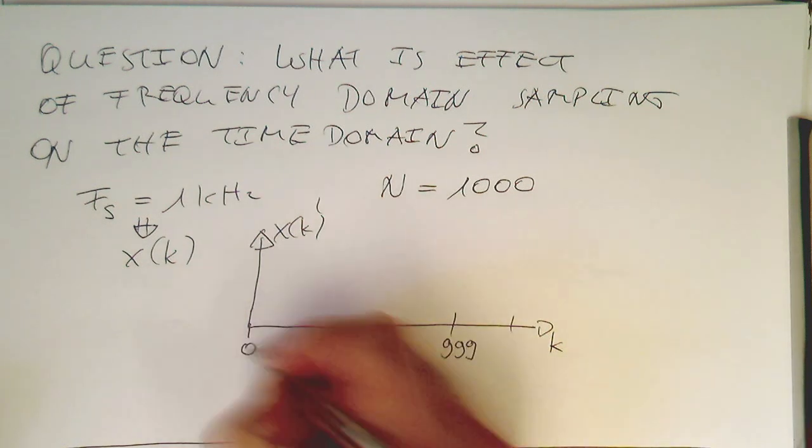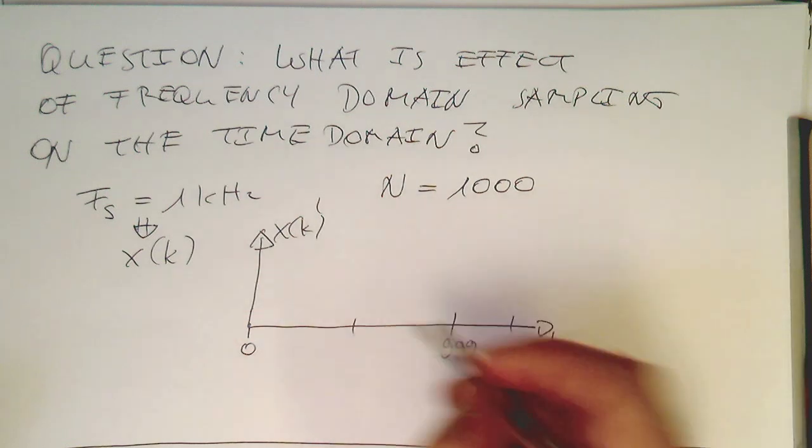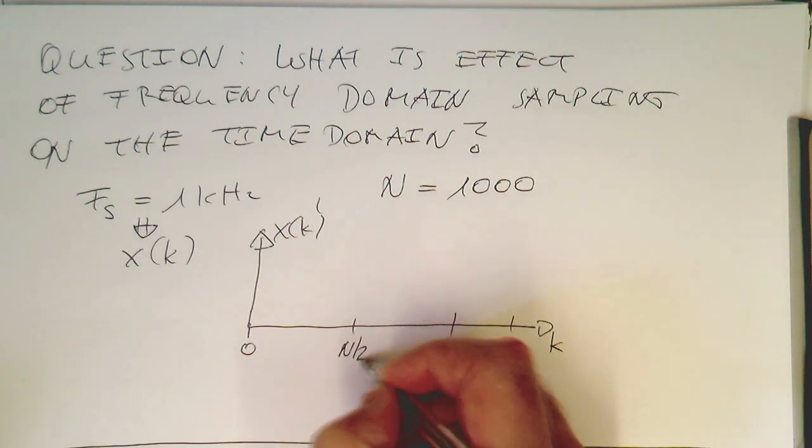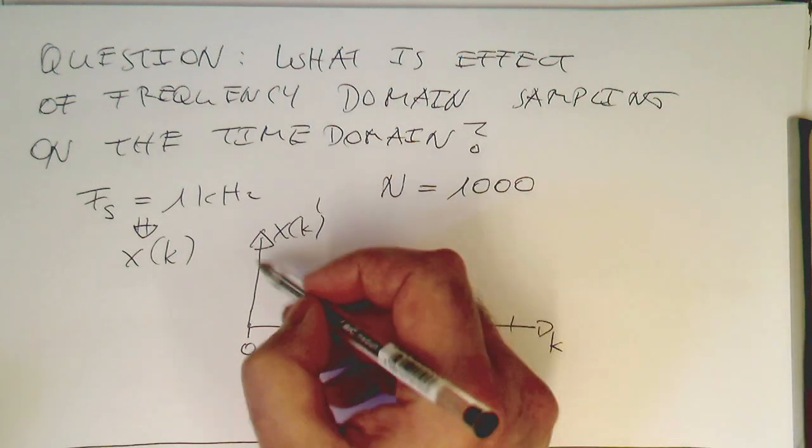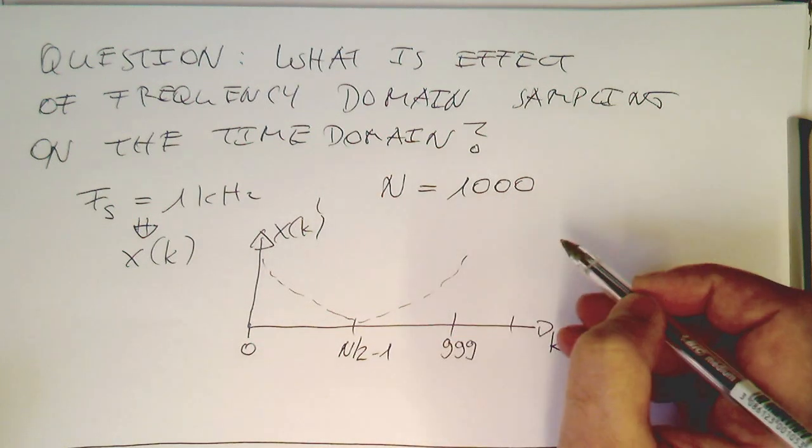So we've got zero somewhere here, and then we've got in the middle here, our center point here, which is n half minus 1. And the spectrum might just look like that.